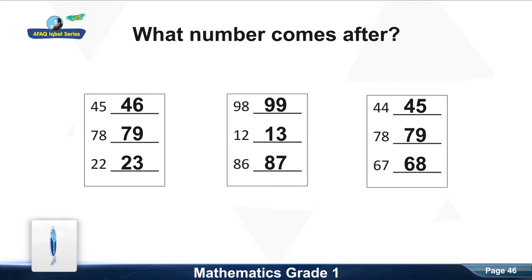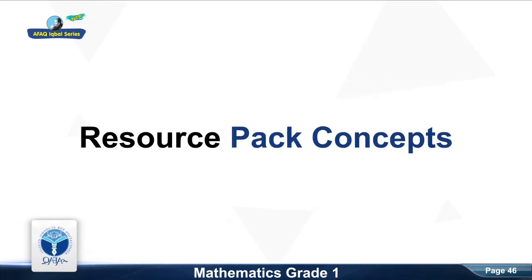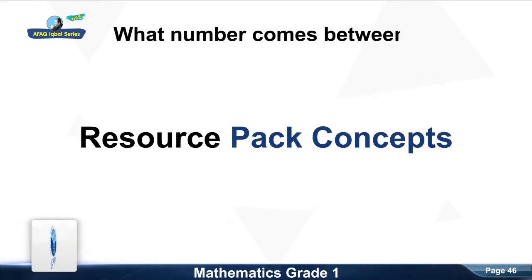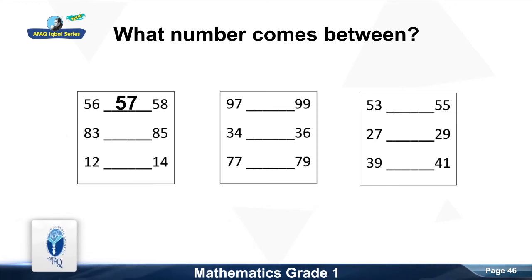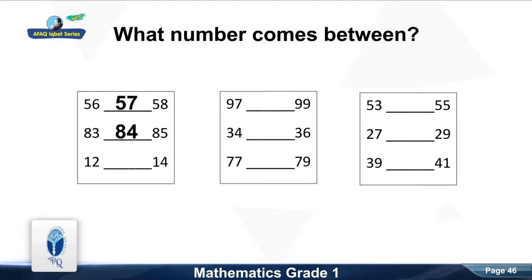Now we move to the next resource pack concept: what number comes between? What number comes between fifty-six and fifty-eight? Good, fifty-seven. What number comes between eighty-three and eighty-five? Good, eighty-four. What number comes between twelve and fourteen? Good, thirteen.